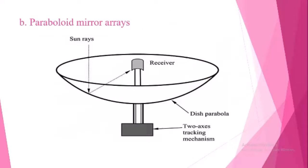Next is the paraboloid mirror arrays. We can see the shape of this collector is like a dish parabola. At the middle position, we install a receiver. At the bottom, a two-axis tracking mechanism is provided for tracking the sun's rays direction to capture maximum sun rays and get maximum output.